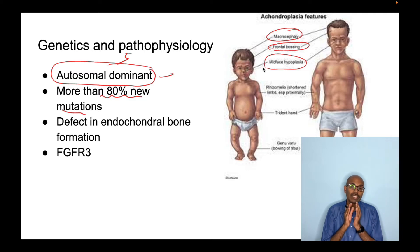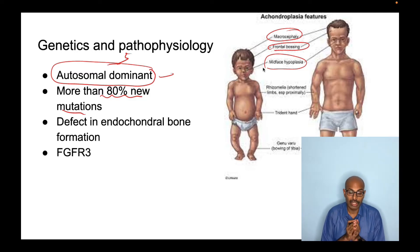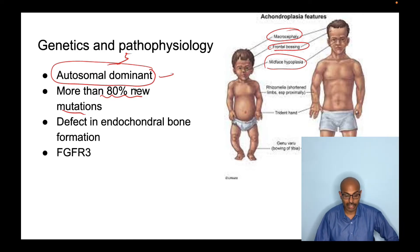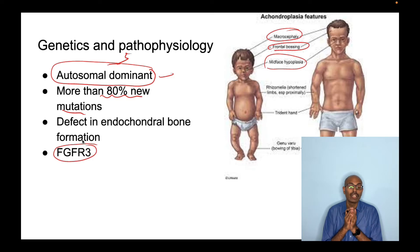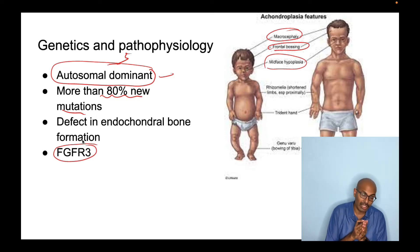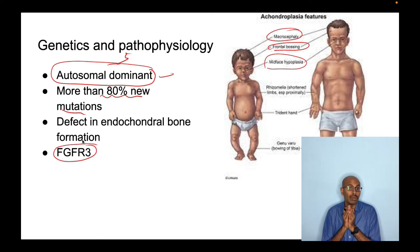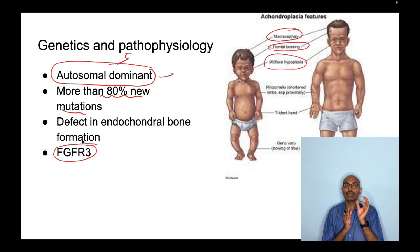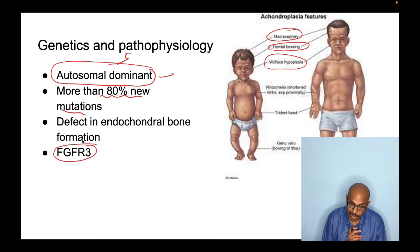This defect in enchondral bone ossification is caused by a mutation in the FGFR3 gene — fibroblast growth factor receptor 3. This gene causes achondroplasia, whereas the FGFR2 gene causes Apert syndrome. So FGFR2 is Apert syndrome and FGFR3 is achondroplasia.